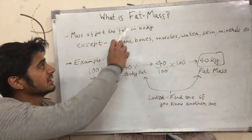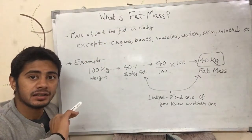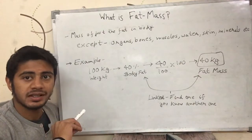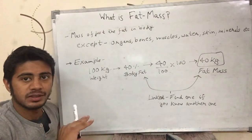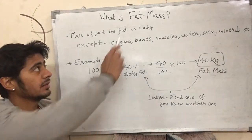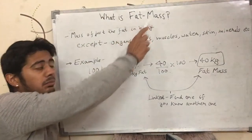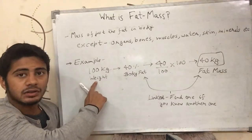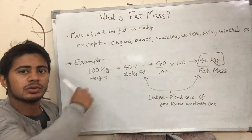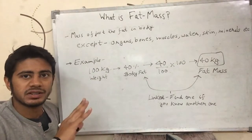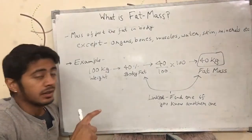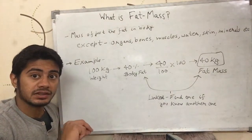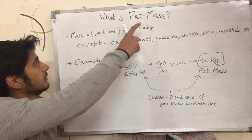What is fat mass? The amount of fat in your body is called fat mass. Fat means fat, mass means weight. So the total amount of fat weight in your body is called fat mass.